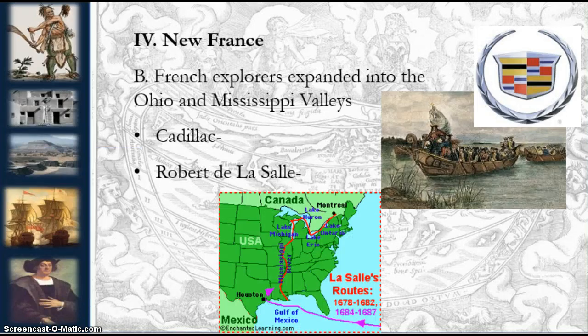Some other French explorers included, as you can see on the slide, those active in the Mississippi and Ohio Valleys. Antoine Cadillac founded Detroit in 1701. He aimed to keep English settlers out of the Ohio Valley.